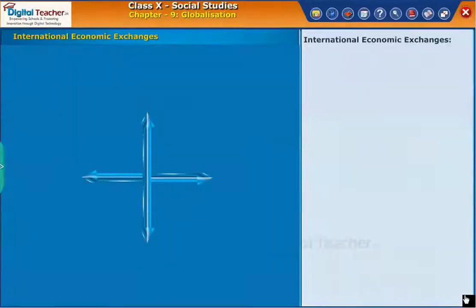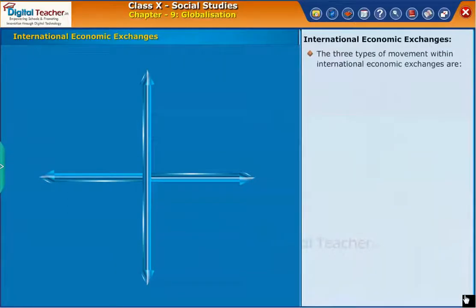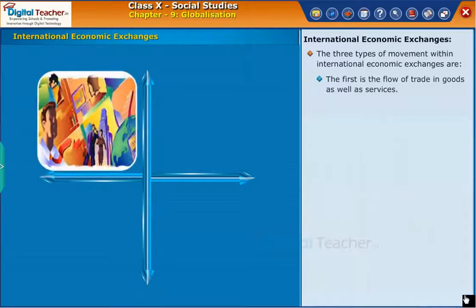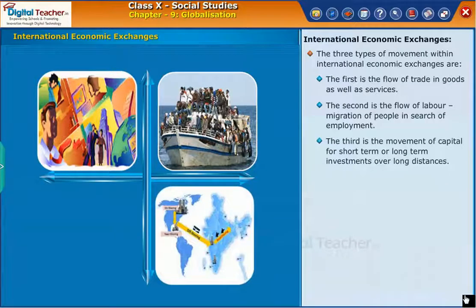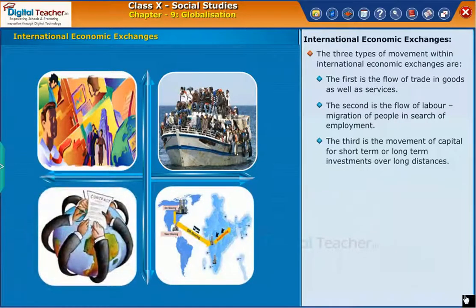Let us study the international economic exchanges. The three types of movement within international economic exchanges are: the first is the flow of trade in goods as well as services; the second is the flow of labor — migration of people in search of employment; and the third is the movement of capital for short-term or long-term investments over long distances.